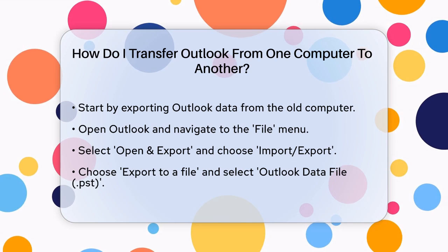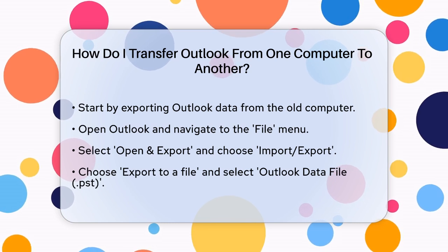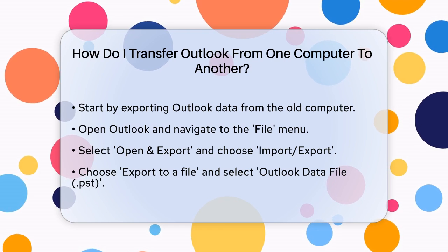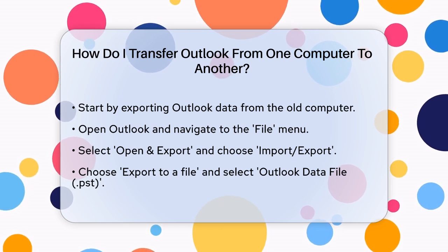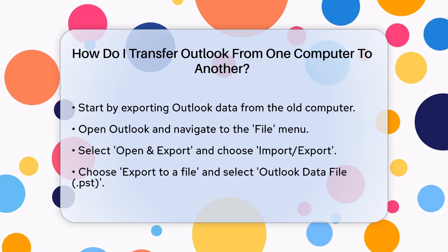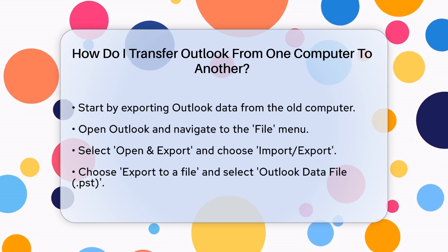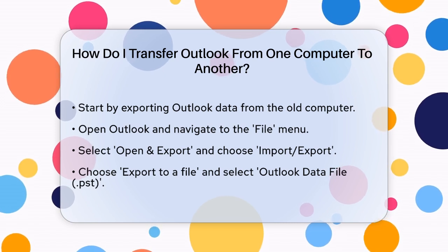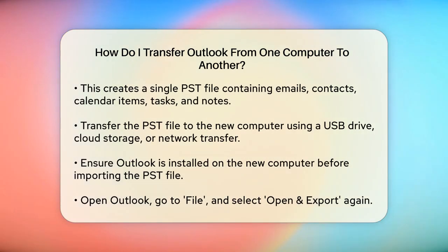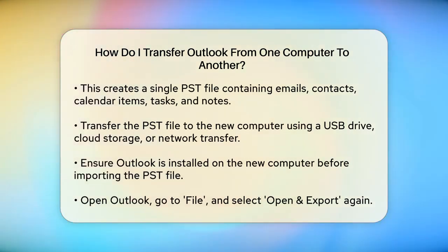First, you need to export your Outlook data from the old computer. Open Outlook, go to the File menu, then select Open & Export and choose Import/Export. Here, you'll select Export to a file and then choose Outlook Data File (.pst) as the file type. This will allow you to export all your emails, contacts, calendar items, tasks, and notes into a single PST file.